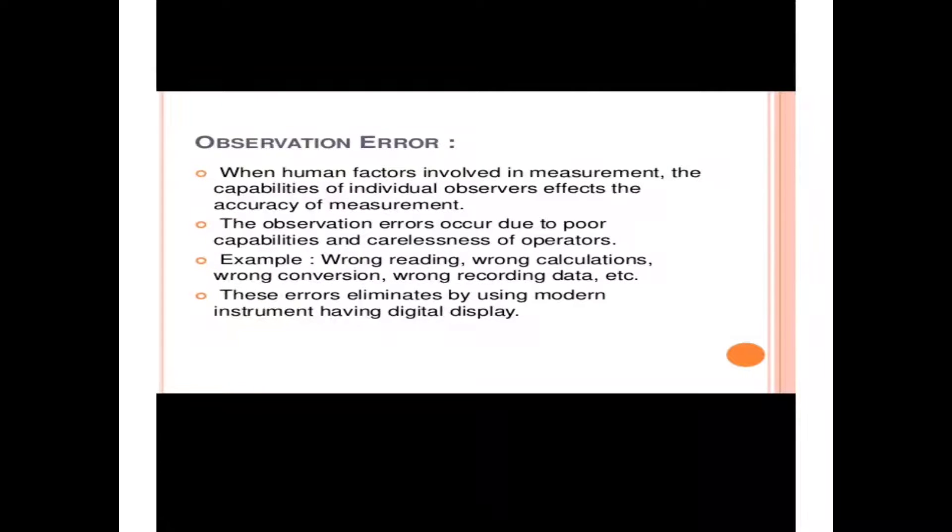Observational error. When human factors are involved in measurement, the capabilities of individual observers affect the accuracy of measurement. Observation errors occur due to poor capabilities and carelessness of operators.